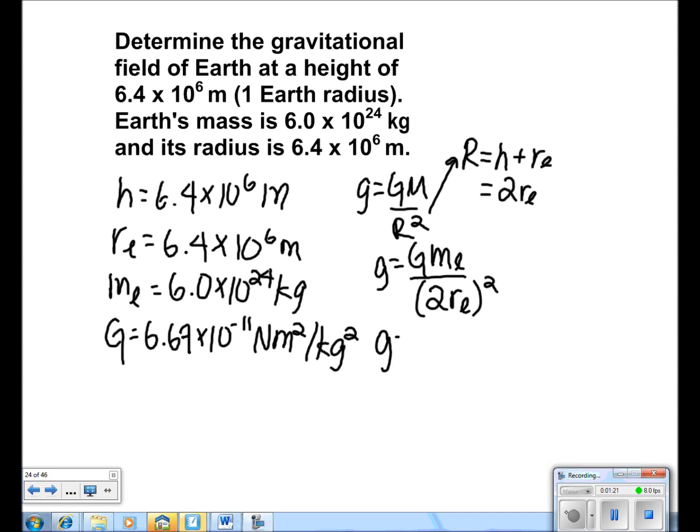Then we plug in the numbers and we get 6.67 times 10 to the negative 11 times 6 times 10 to the 24th all over 2 times 6.4 times 10 to the 6th squared.